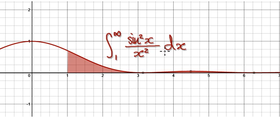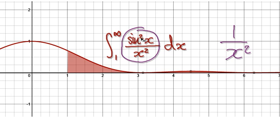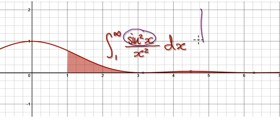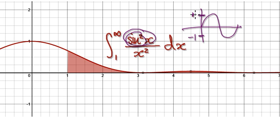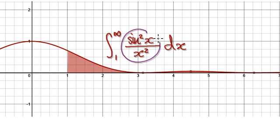The secret to doing this is to realize that you have to compare this with 1 over x squared. If you look at this, sine of x — the highest value is 1, the lowest is negative 1. But then when you square it, the highest will be 1 times 1. So this thing here will be in between 0 and 1. So we can say that this thing here will be less than or equal to 1 over x squared.